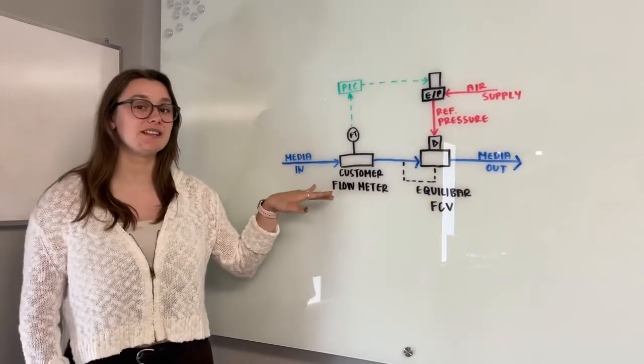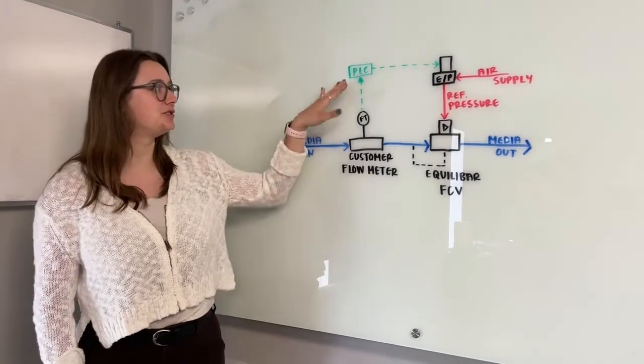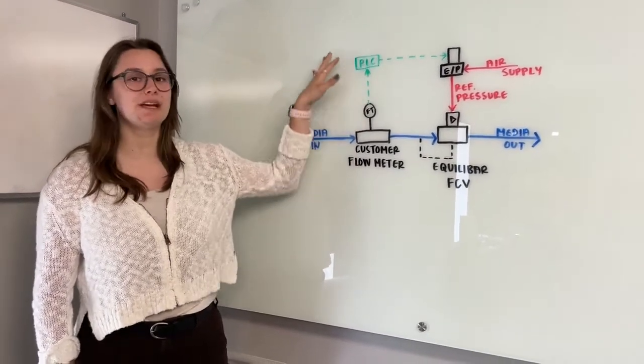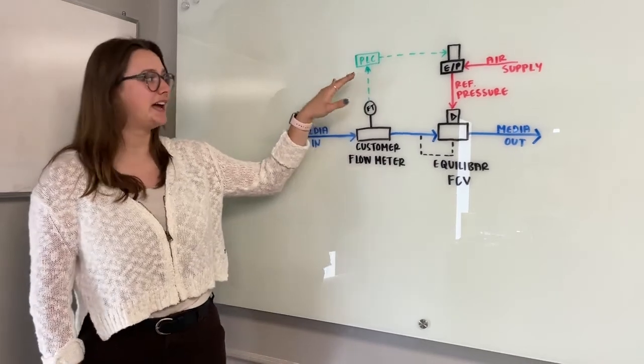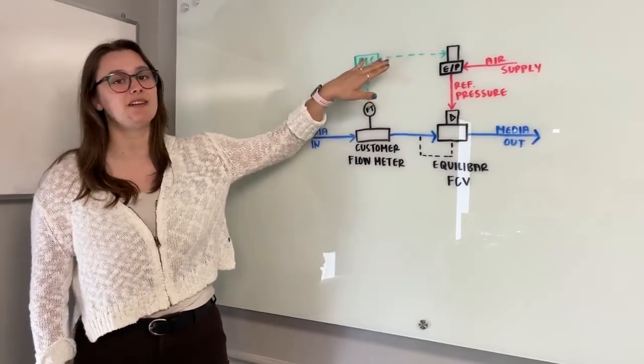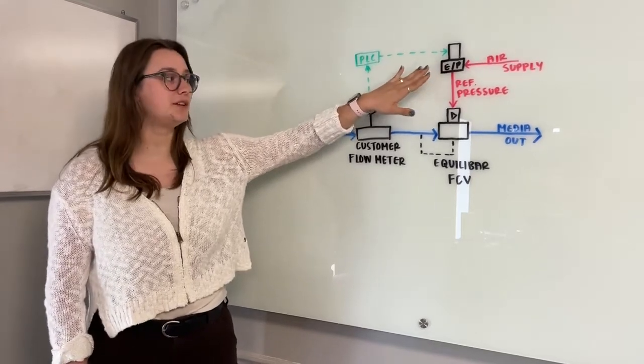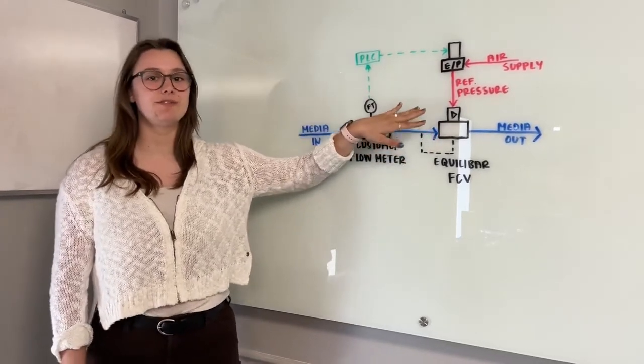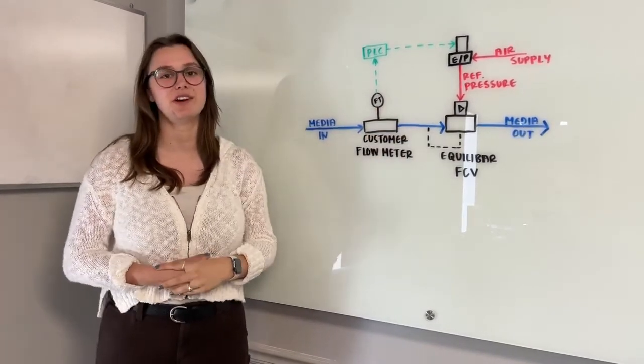The flow meter is translating the measured flow to a 4 to 20 milliamp signal which is going to the PLC being run through a PID loop comparing the measured flow to the set point we're giving it and that is translated to a 0 to 10 volt output signal which is driving our QPV. The QPV will increase the pressure on the dome of the Equilibar in order to decrease the flow in the system and the other way around in order to increase the flow.